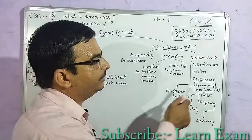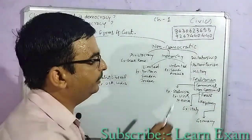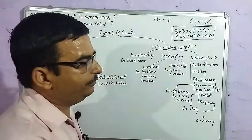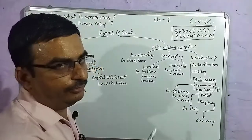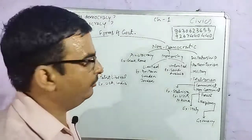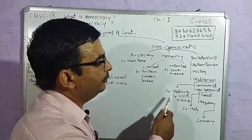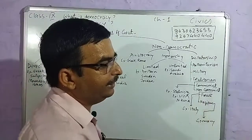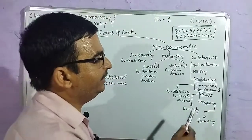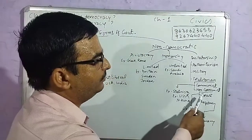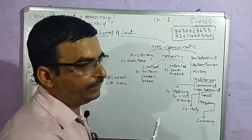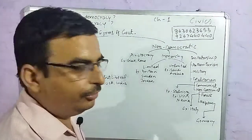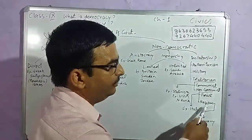Dictatorship can be divided into communist totalitarian and non-communist totalitarian. Non-communist totalitarian governments in Italy were formed around the period of the first and second world wars.